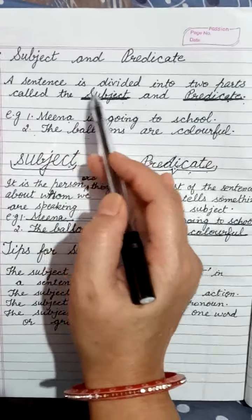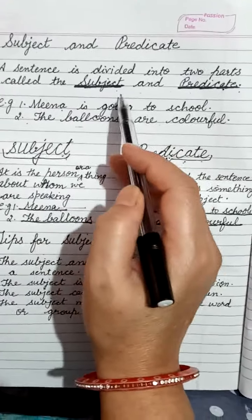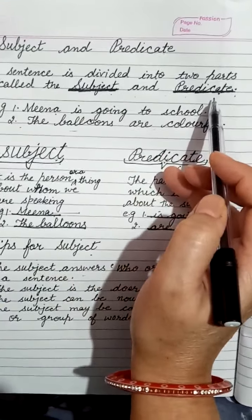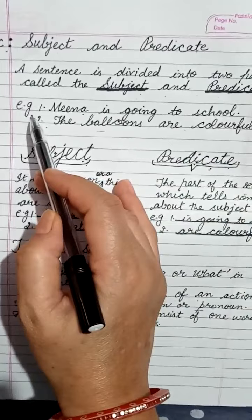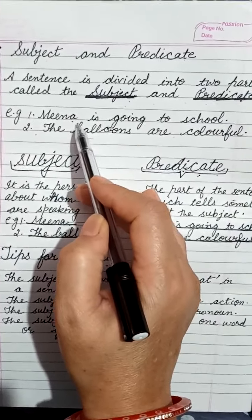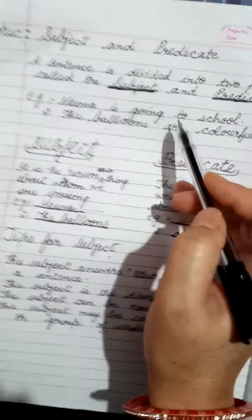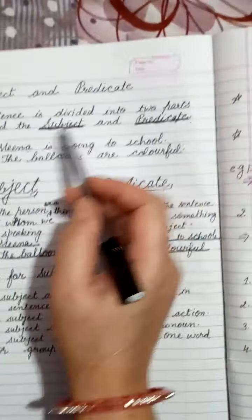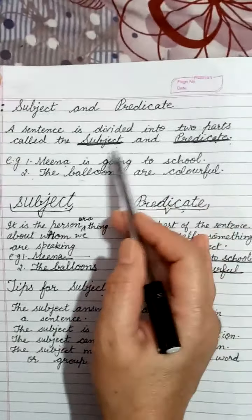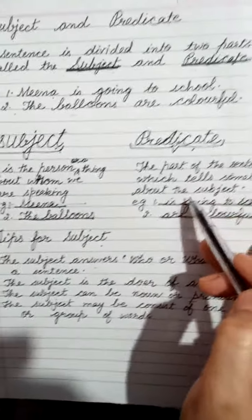A sentence is divided into two parts called the subject and predicate. For example, I have written here two sentences: 'Mina is going to school' and 'The balloons are colorful.' As we have read, a sentence is divided into two parts — one part is subject and the other part is predicate.